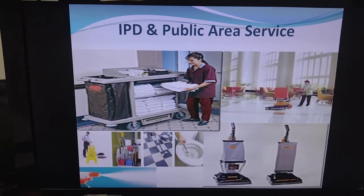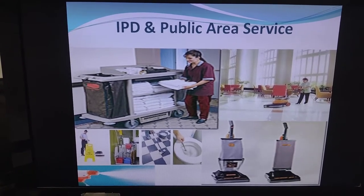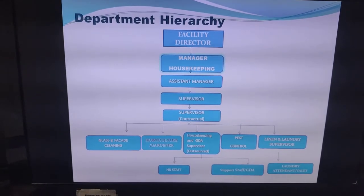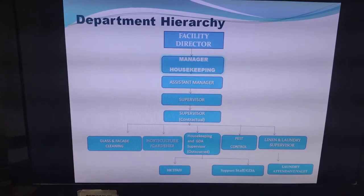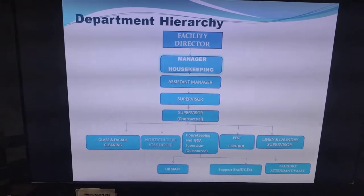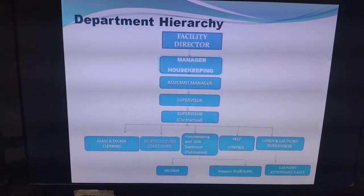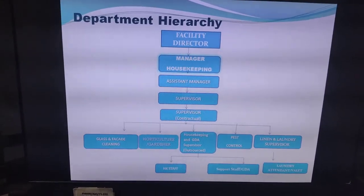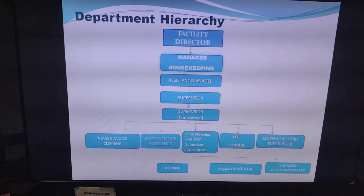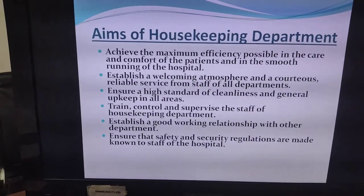This slide is self-explanatory about housekeeping operations. Now, about the housekeeping hierarchy — the department is headed by a housekeeping manager who reports to the facility director. The manager is assisted by an assistant manager, supervisors, contractual supervisors, glass and facade cleaning staff, horticulture gardeners, housekeeping and GDA supervisors, pest control, and laundry and linen management.